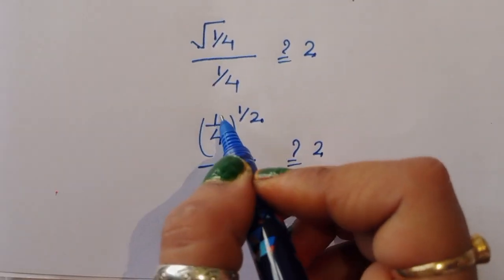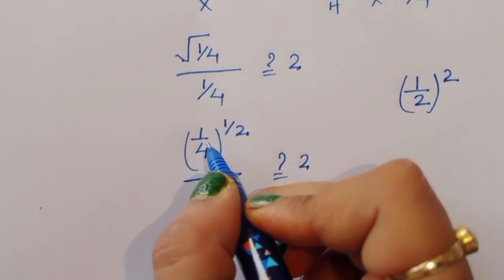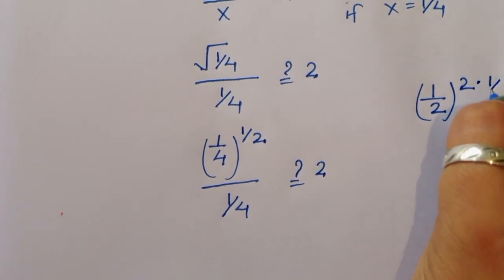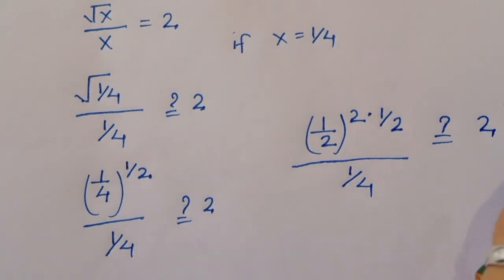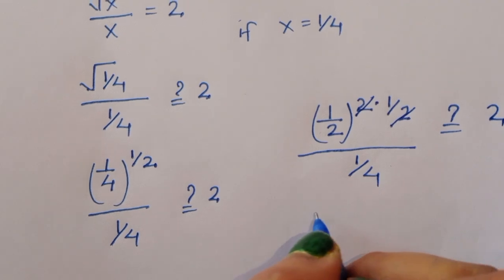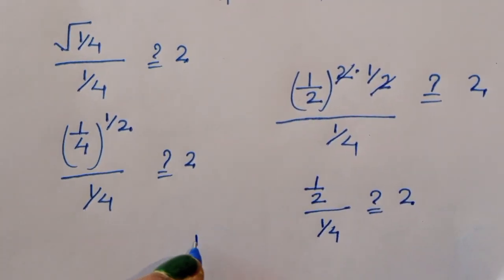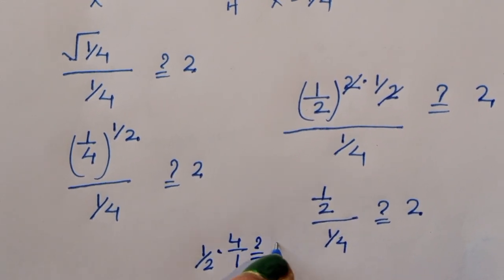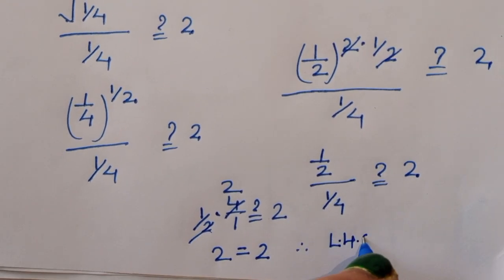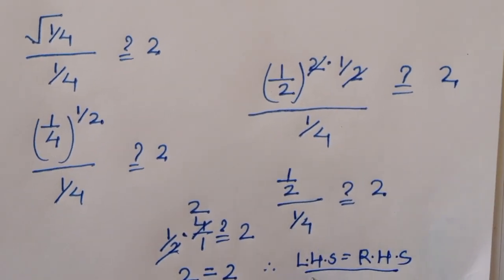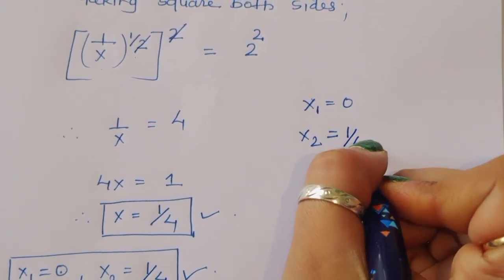Now square root of 1 by 4 equals 1 by 2. So we have 1 by 2 divided by 1 by 4, question mark 2. This gives 1 by 2 times 4 by 1, which equals 2. So 2 is equal to 2, therefore LHS is equal to RHS. The value of x: x1 is equal to 0 and x2 is equal to 1 by 4. This is the correct solution.